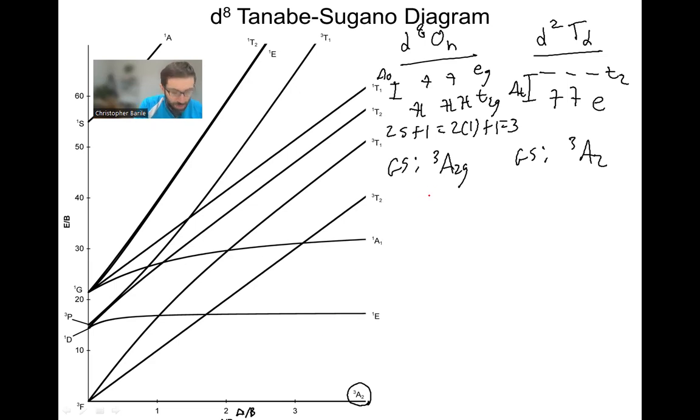Now we're asking the question, what are the spin allowed transitions? Our spin selection rules tell us that you only have a spin allowed transition if you preserve the spin. Our ground state is a triplet, and we're going to go to some excited state. So we need to preserve that triplet. If we go to this singlet E, that's changing the spin. So that's not going to be spin allowed. It's going to be a very weak transition in terms of its intensity in the UV-Vis spectrum. Same thing with this singlet A1. But this singlet T2, we have a spin allowed transition.